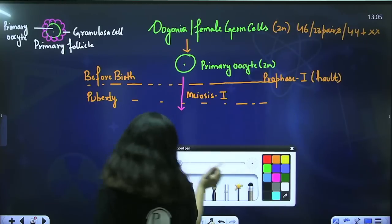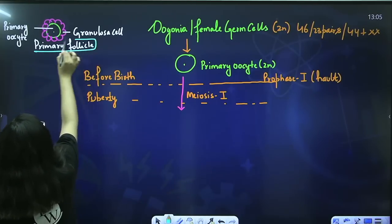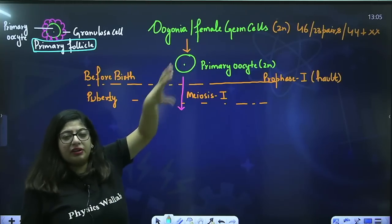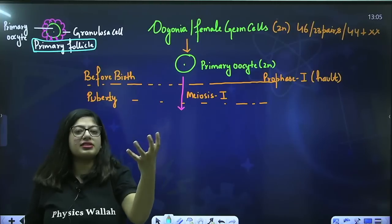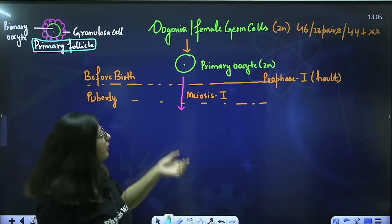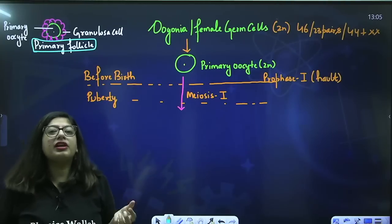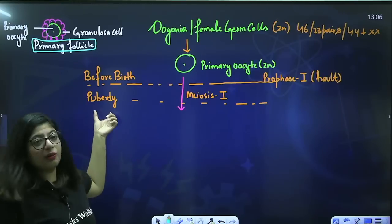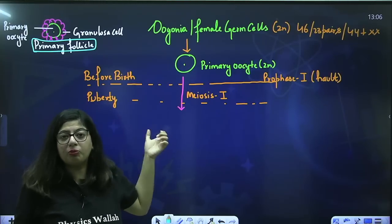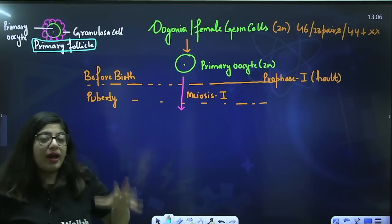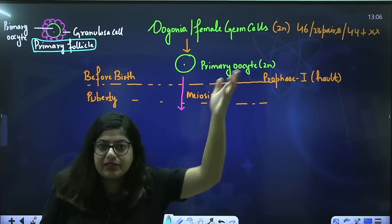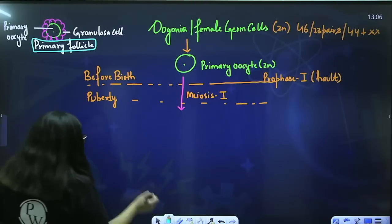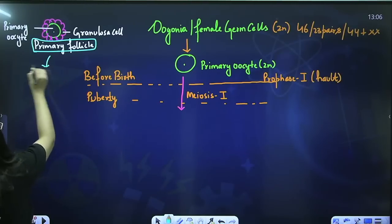When a female is born she has around 2 to 20 lakh primary follicles — these are immature, with primary oocytes inside them that have started meiosis I. Now, to complete meiosis I the female must hit puberty. When she hits puberty, hormones rise — specifically FSH, follicle stimulating hormone.